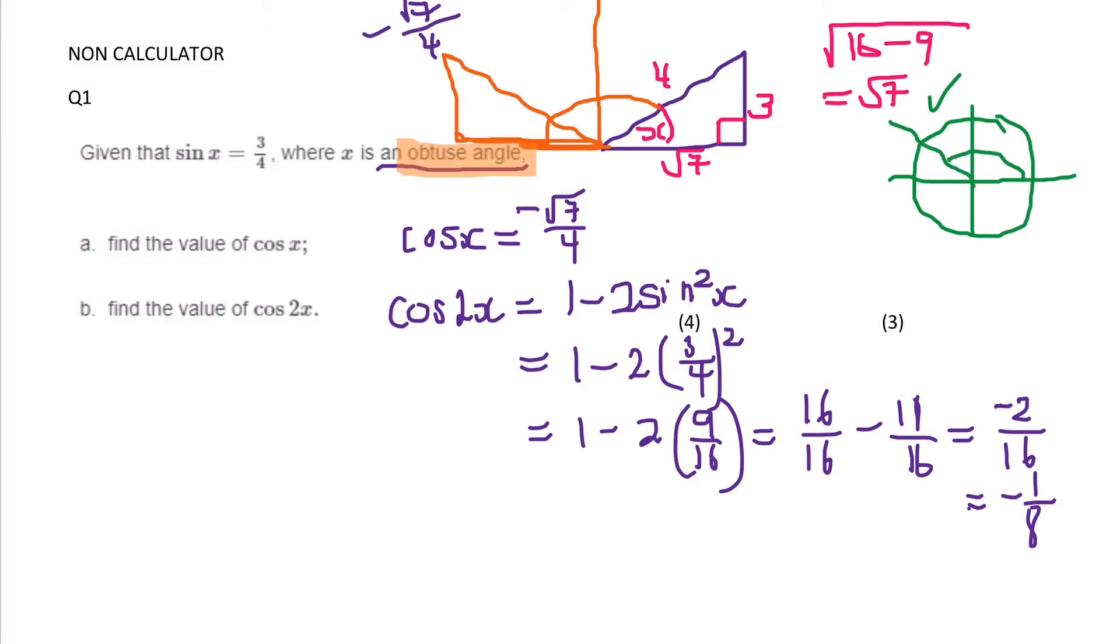You know that it's an obtuse angle so the angle is going to be in here somewhere. So you've got to find the obtuse angle and not the acute angle. Which when you use cos, it's adjacent over hypotenuse. So if I know that that's root 7 over 4 in the acute angle, over on the other side it's going to be negative root 7 over 4.